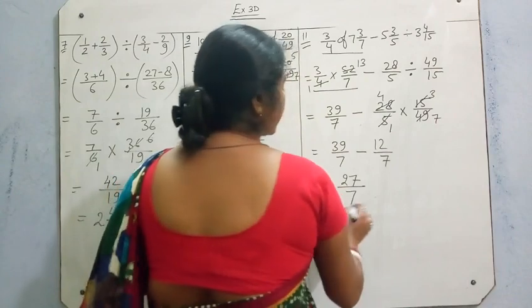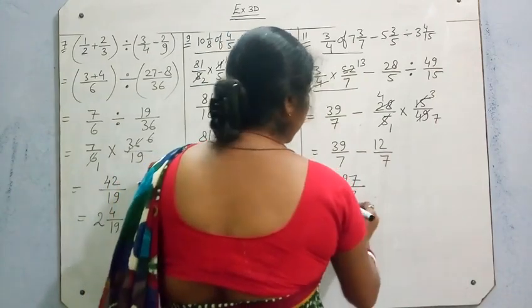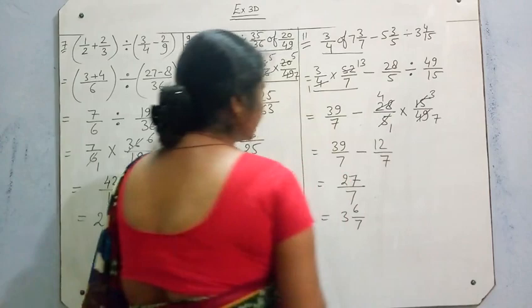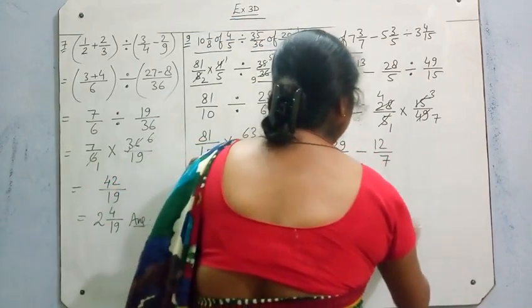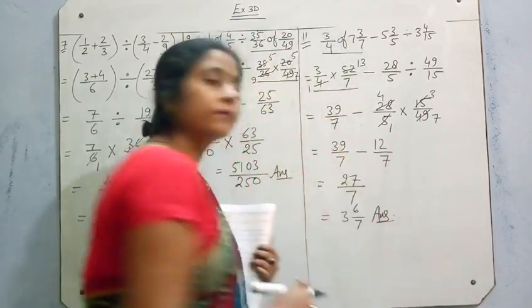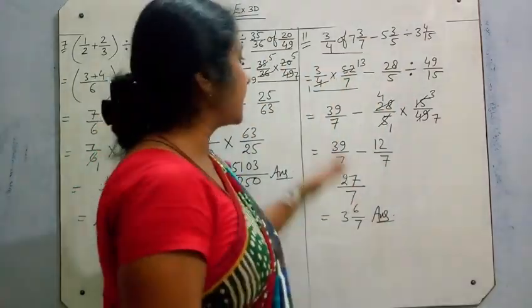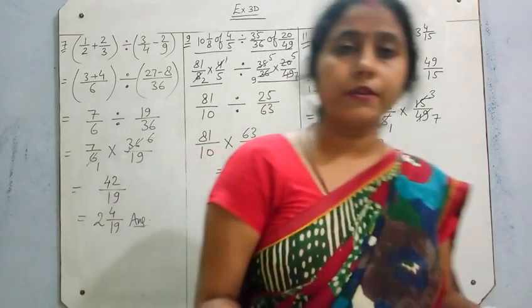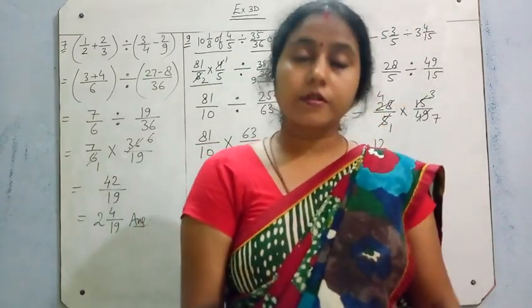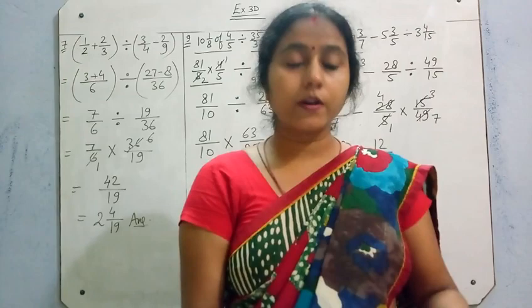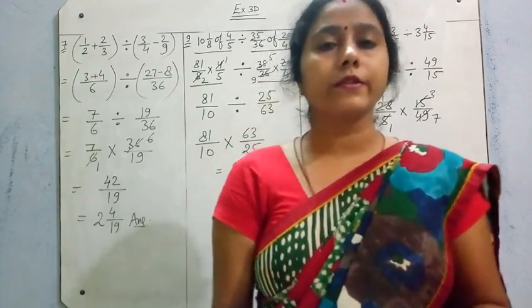Change 27/7 to a mixed fraction — 7 times 3 is 21, remainder 6, so the answer is 3 and 6/7. So all the odd number questions from exercise 3 have been solved in this video. In my next video I will solve the next set — question 3's word problems. Thank you.